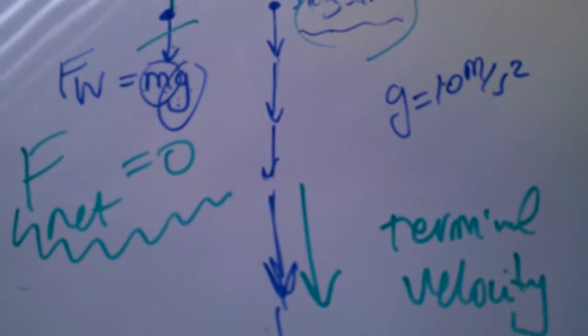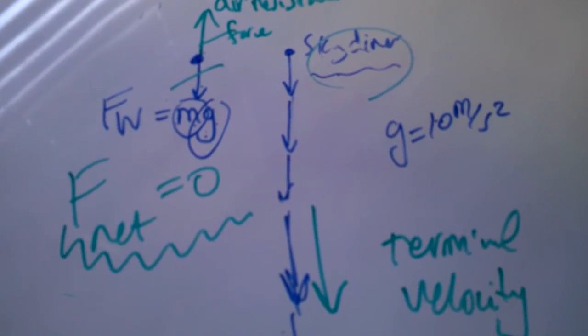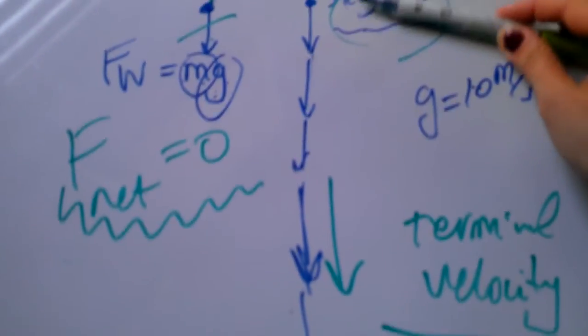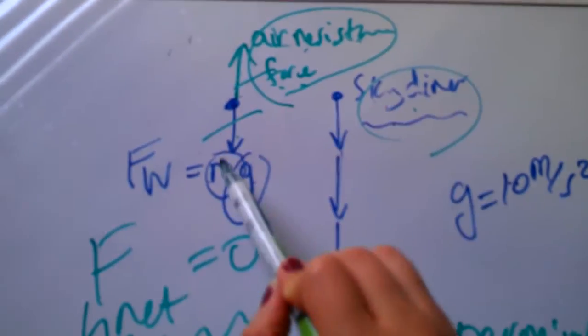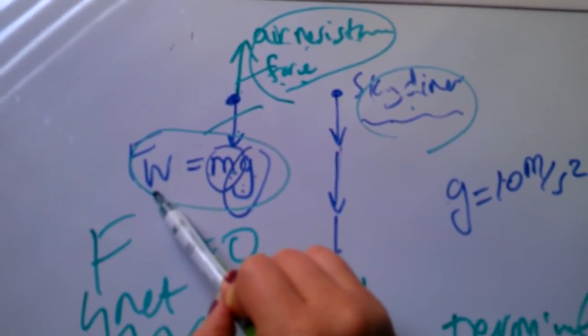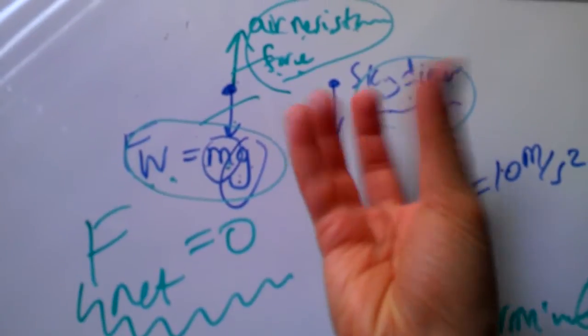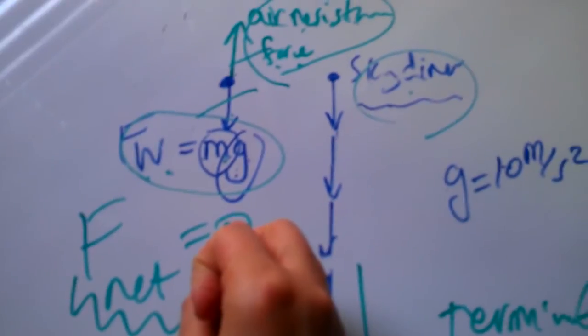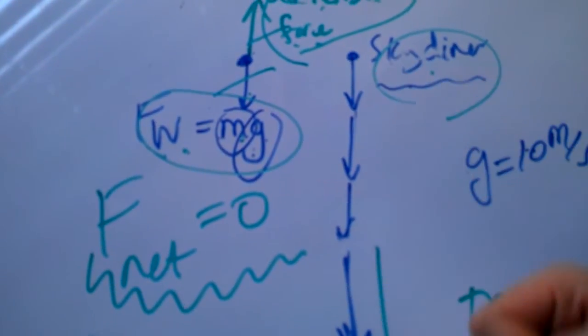So this is the definition for terminal velocity. Terminal velocity comes into play when you are so up high from Earth that you can have a big enough air resistance force on your body such that the air resistance cancels out the weight of your body. The weight stays the same, the mass times g which is 10 meters per second squared, this is a constant downward force. However, air resistance grows bigger and bigger as velocity grows.